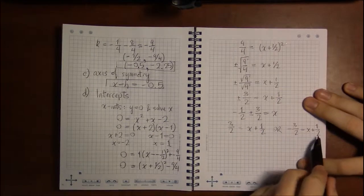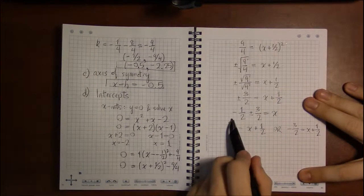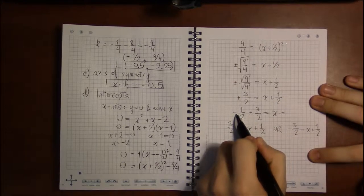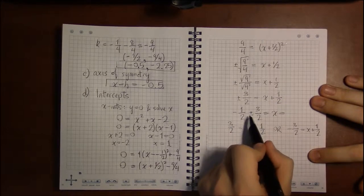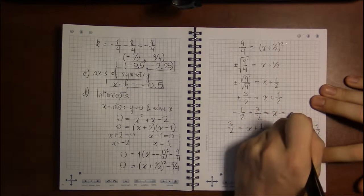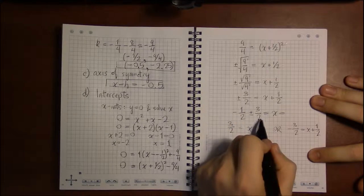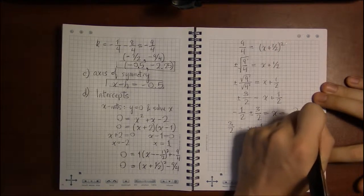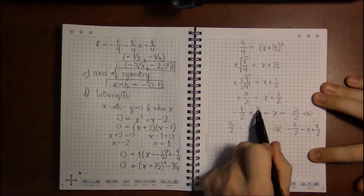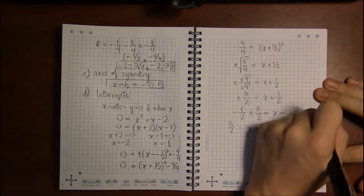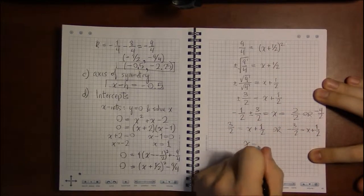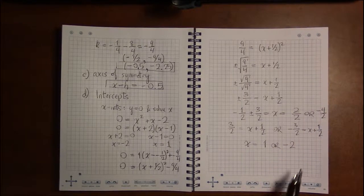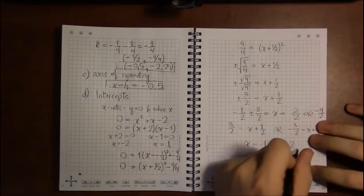But essentially, what you're going to end up with is this. And this, we can simplify by looking at it case by case. Minus 1 half plus 3 halves is going to be 2 halves. Or, we could take the negative. Minus 1 half minus 3 halves, which would be minus 4 halves. So, our x-intercepts are 1 or minus 2. That's for x-intercepts.